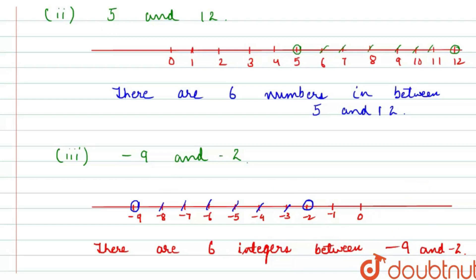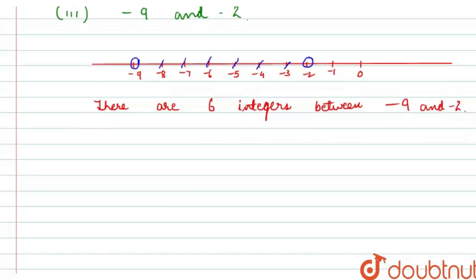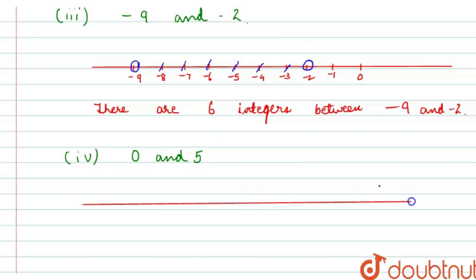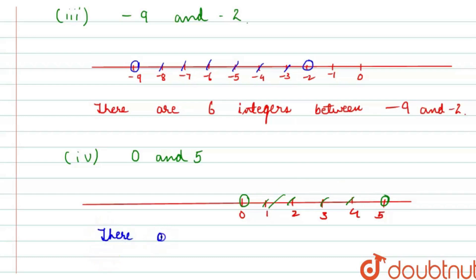Let's proceed with the last part of the question, which is between 0 and 5. I'll again draw an integer line. 0 is at the center, so it's 1, 2, 3, 4, 5 and both sides extend up to infinity. Now we have to find between 0 and 5. Counting: 1, 2, 3, 4. So there are 4 integers between 0 and 5.